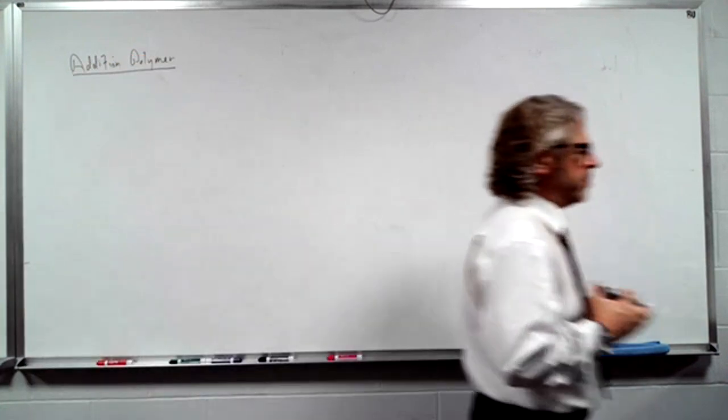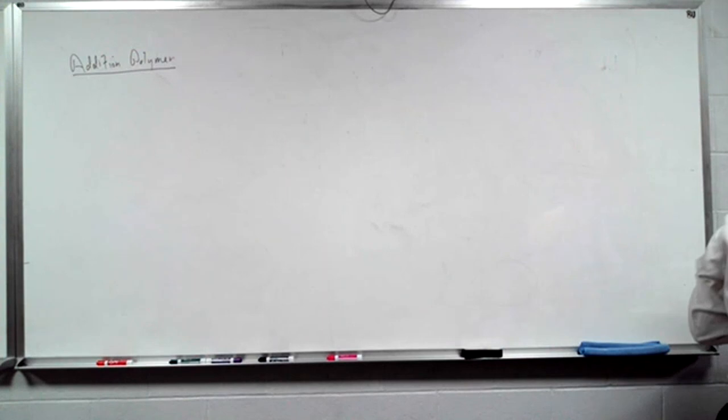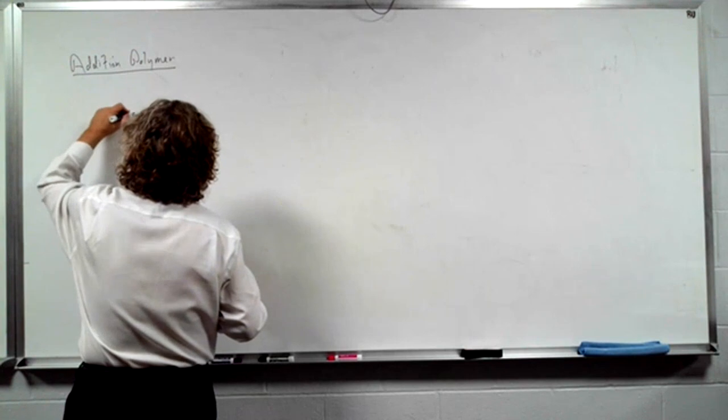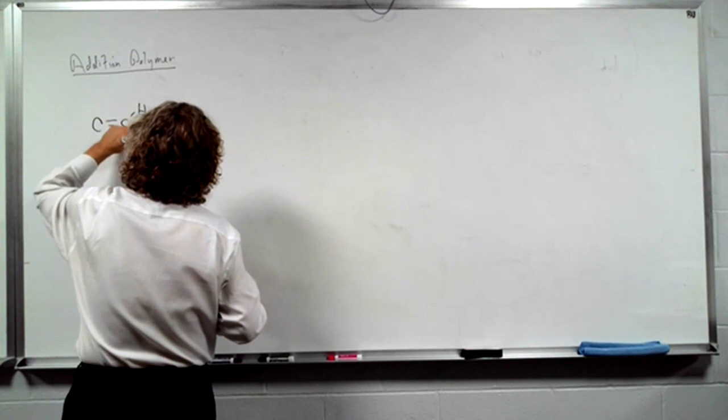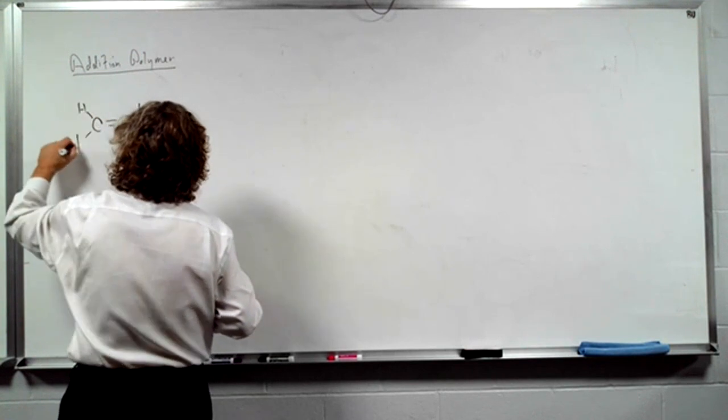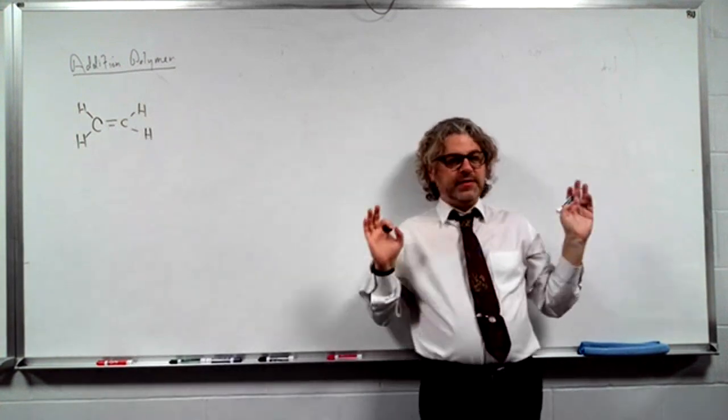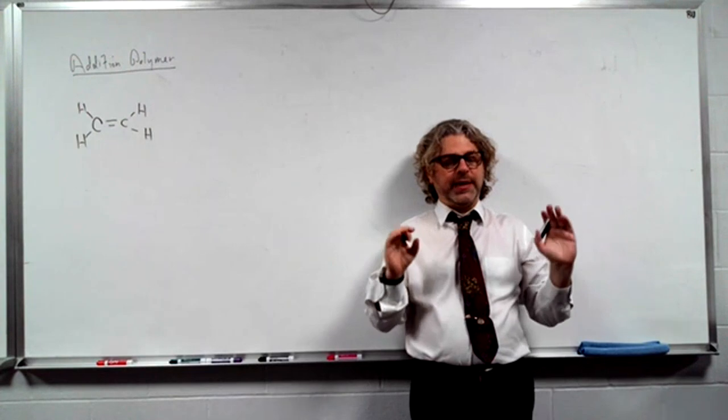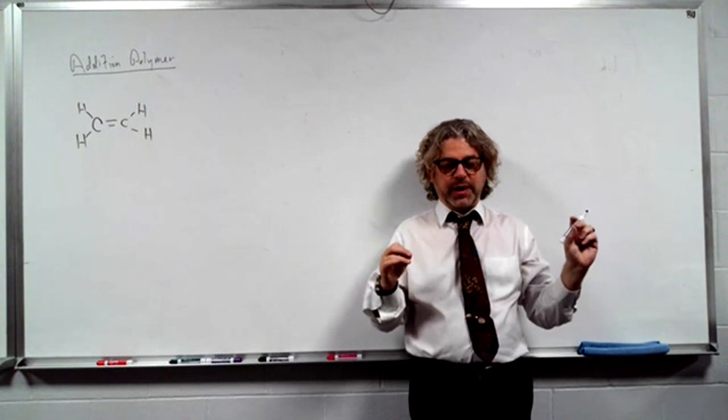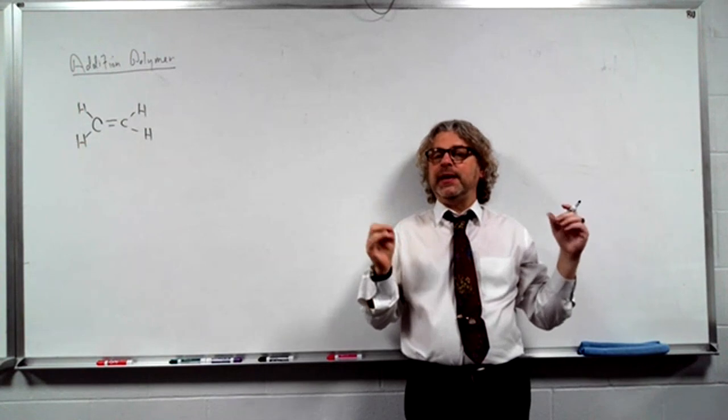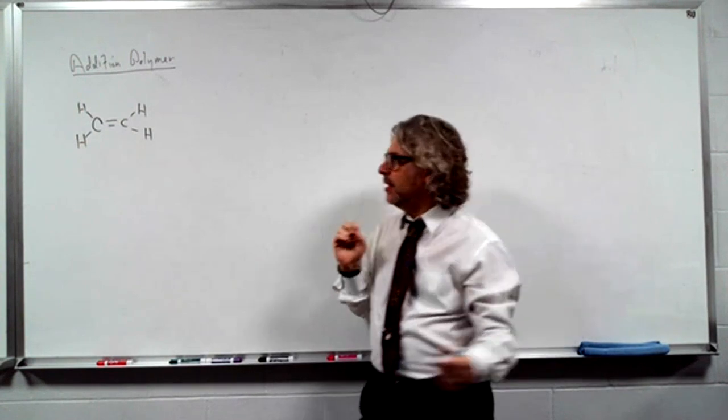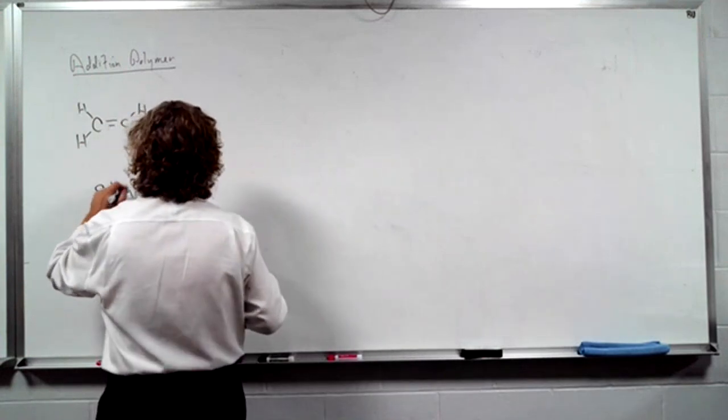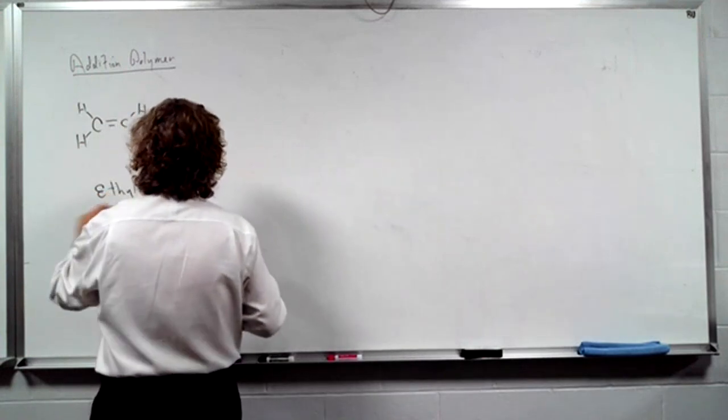Now this one really is named after the monomer with the word poly in front of it. So first and foremost, this, two carbons. This is ethylene.